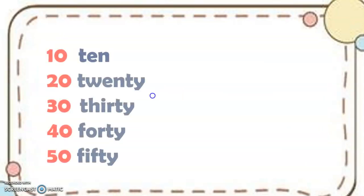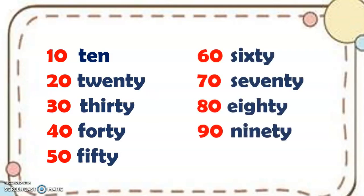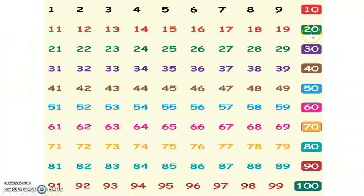We may also use skip counting by tens to make writing and reading numbers easier for us. So we have 10, 20, 30, 40, 50, 60, 70, 80, and 90. For example, we have the number 20 and then we have number 6 — together we'll have 26. Again, for example, we are going to write 57: we have 50 and 7, so we will have 57.